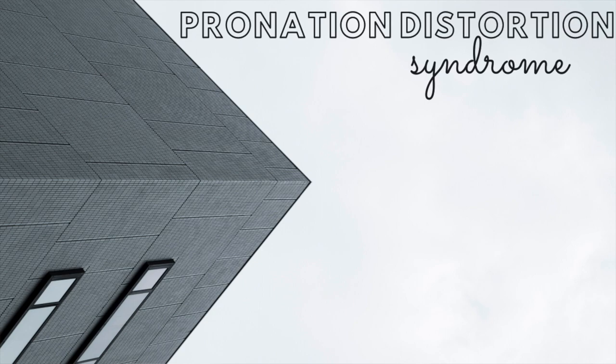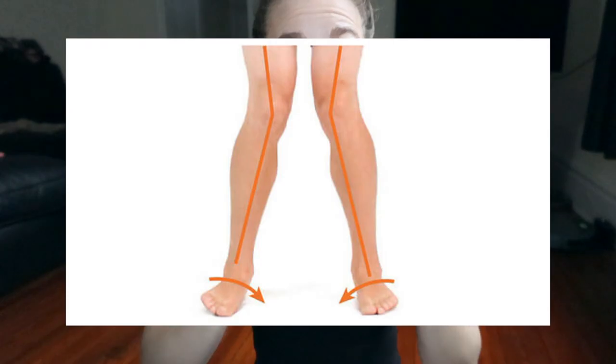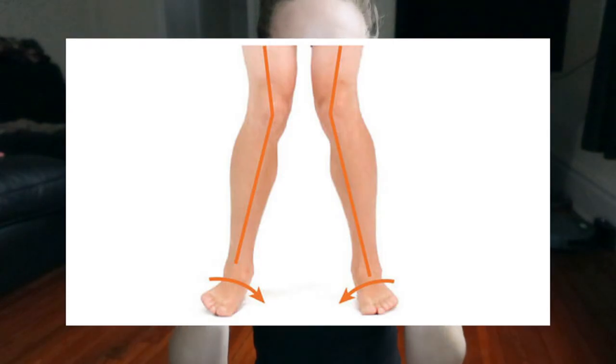The last one is pronation distortion syndrome. This is typically characterized by knock knees — where your knees go together — and then pronated feet. Pronated feet is when they come in toward each other; supinated would be out. I always remember it this way: pronation is down, and supinated or supine is up.